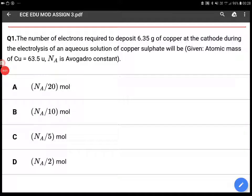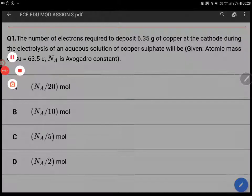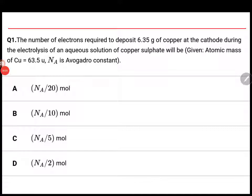The number of electrons required to deposit 6.35 grams of copper at the cathode during the electrolysis of an aqueous solution of copper sulfate will be how much? Once you get the mole, you can calculate the number of electrons.